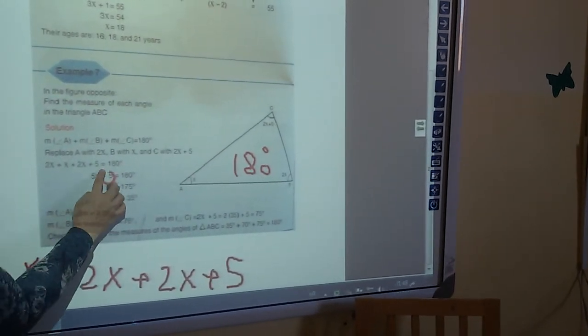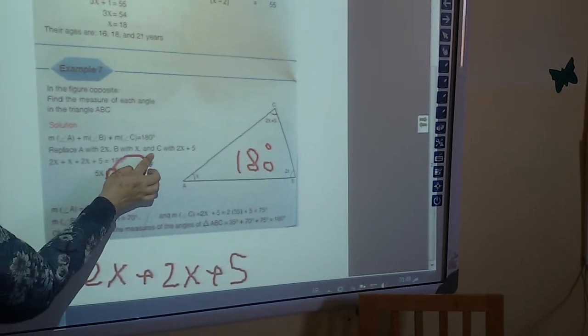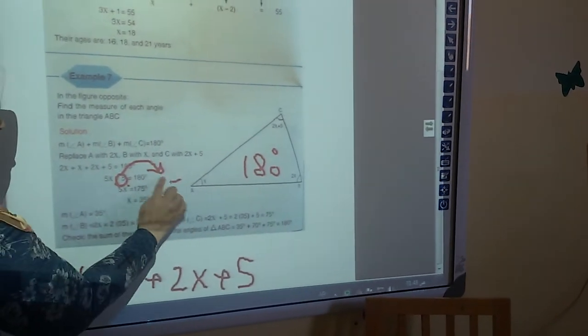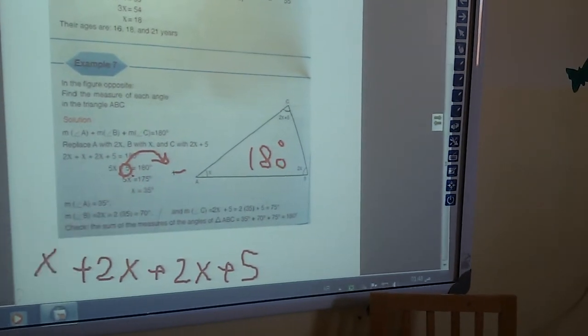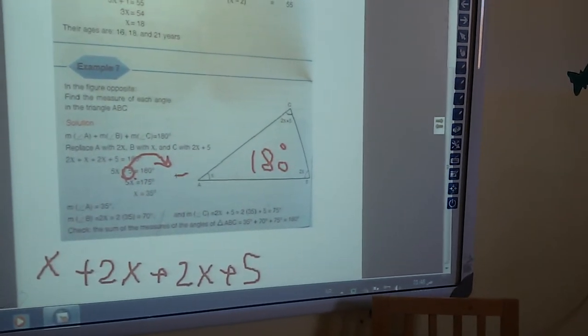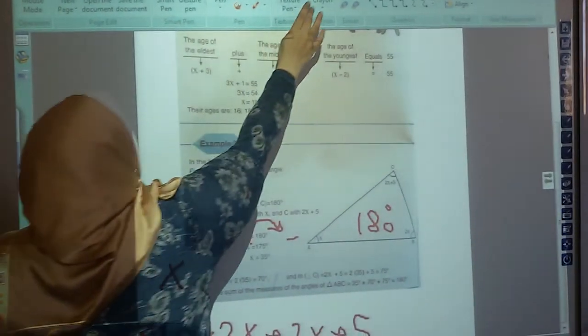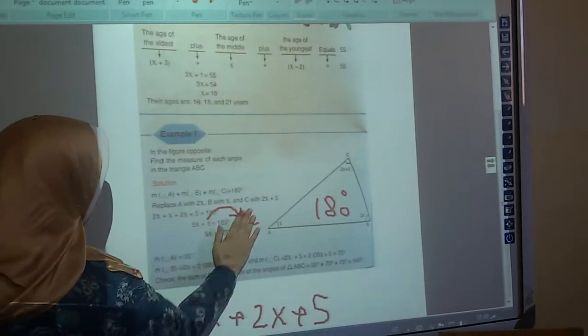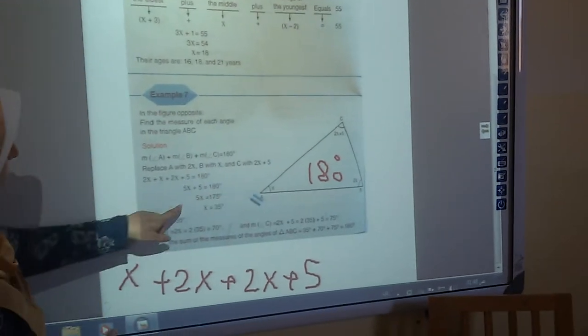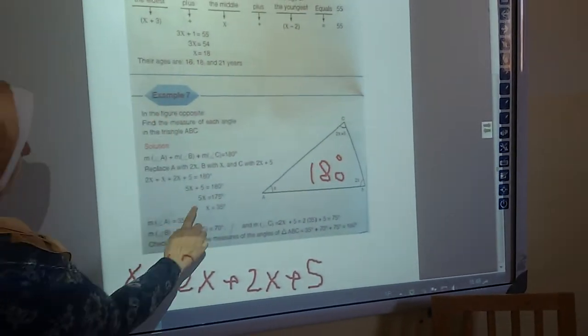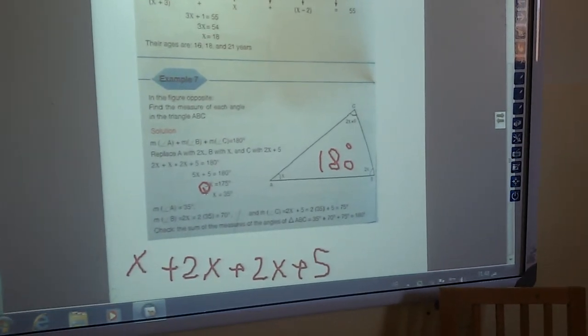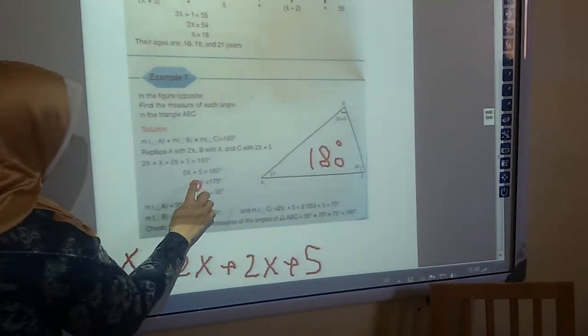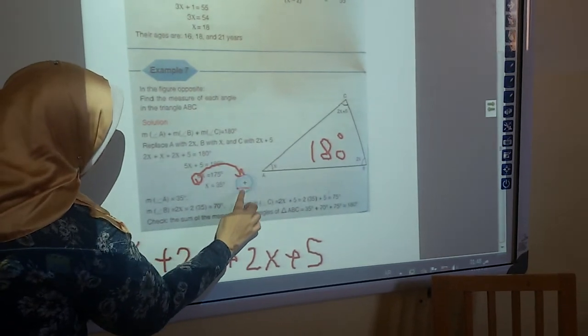What I'm going to do with the plus 5? We're going to go to the other side with minus. Very good. So I'm going to minus 5 from 180. It will be 175. Now, what I'm going to do with this 5 beside the x? Any number beside the x means times. So it will go to the other side with divide.